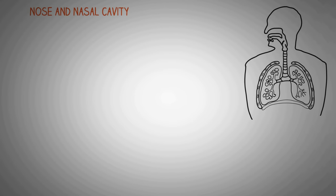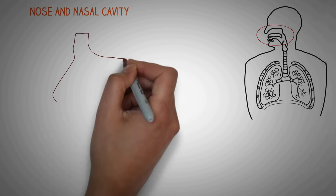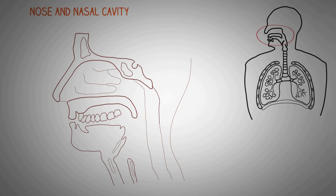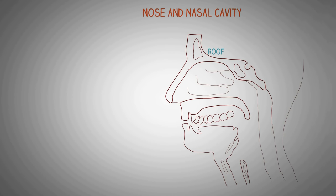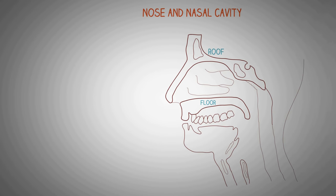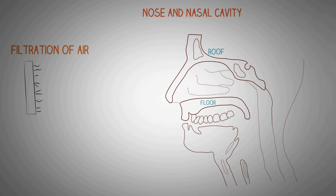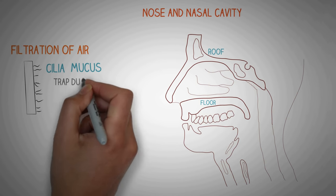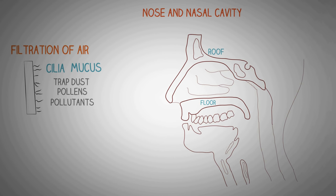Let's first talk about the brief anatomy of the nose and the nasal cavity. Looking at this diagram, we can see that the nasal cavity is made up of a roof, which is formed by the bones at the base of the skull, and a floor made up of the palatine bones. The main job of the nose and nasal cavity in the respiratory tract is the filtration of air. This is made possible by small hair-like structures called cilia, and by mucus secreted by the nasal walls, which traps dust, pollens, and other pollutants present in the atmospheric air.